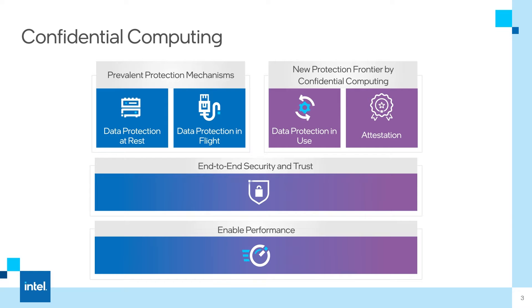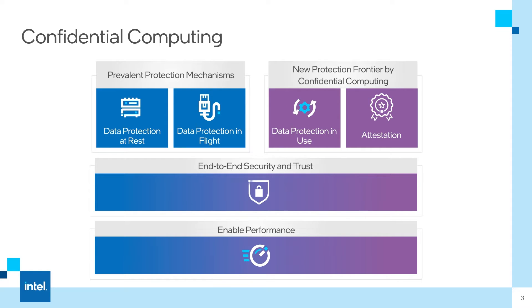With existing technologies, even if you had an encrypted disk image, once it's decrypted in memory it's plain text. Now data is encrypted even during runtime. When read from main memory it stays encrypted on the data bus and it only gets decrypted inside the CPU, and it's only plain text inside the CPU.